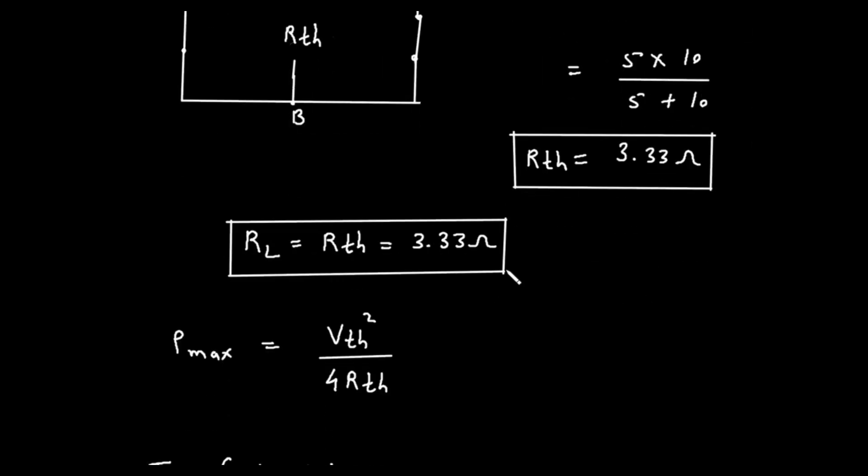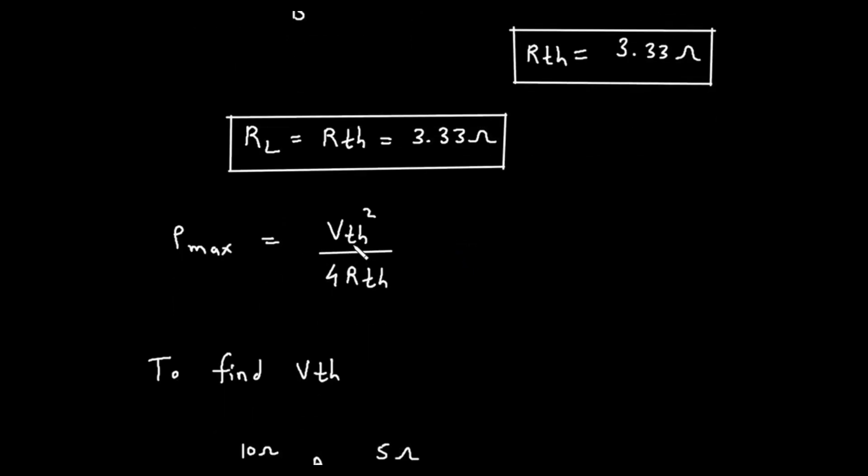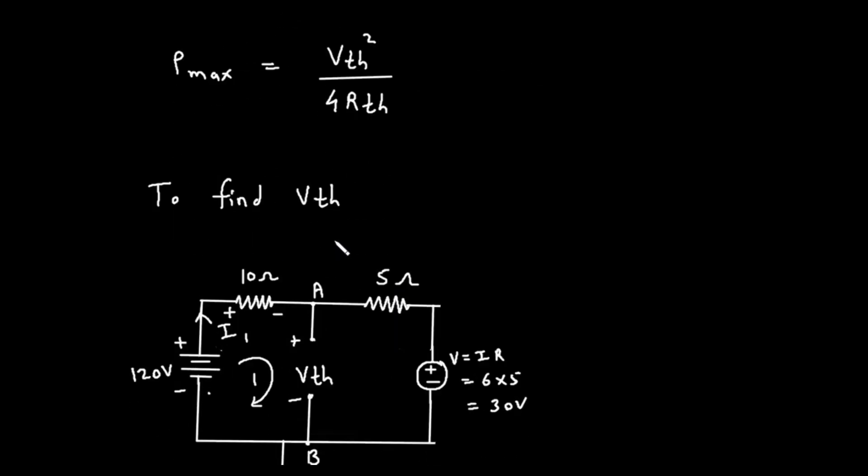As per the maximum power transfer theorem, the value of the load resistor RL for maximum power absorption must be equal to the Thevenin resistance. Therefore, RL is equal to 3.33 ohms. This is the first part of our answer. Now that we have the value of RL, we need to find the maximum power, Pmax, that it can absorb. The formula for maximum power is Pmax equals the Thevenin voltage squared, divided by 4 times the Thevenin resistance. That is, Pmax equals VTH squared over 4 times RTH. This means our next major step is to find the Thevenin voltage, VTH.